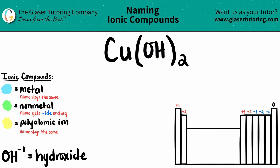Today we are going to find the name for the ionic compound CuOH₂. Now keep in mind that if you have three or more elements in your ionic compound, that means that you have at least one polyatomic ion. In this case, we have copper, oxygen, and hydrogen — so I know that I have a polyatomic in here.